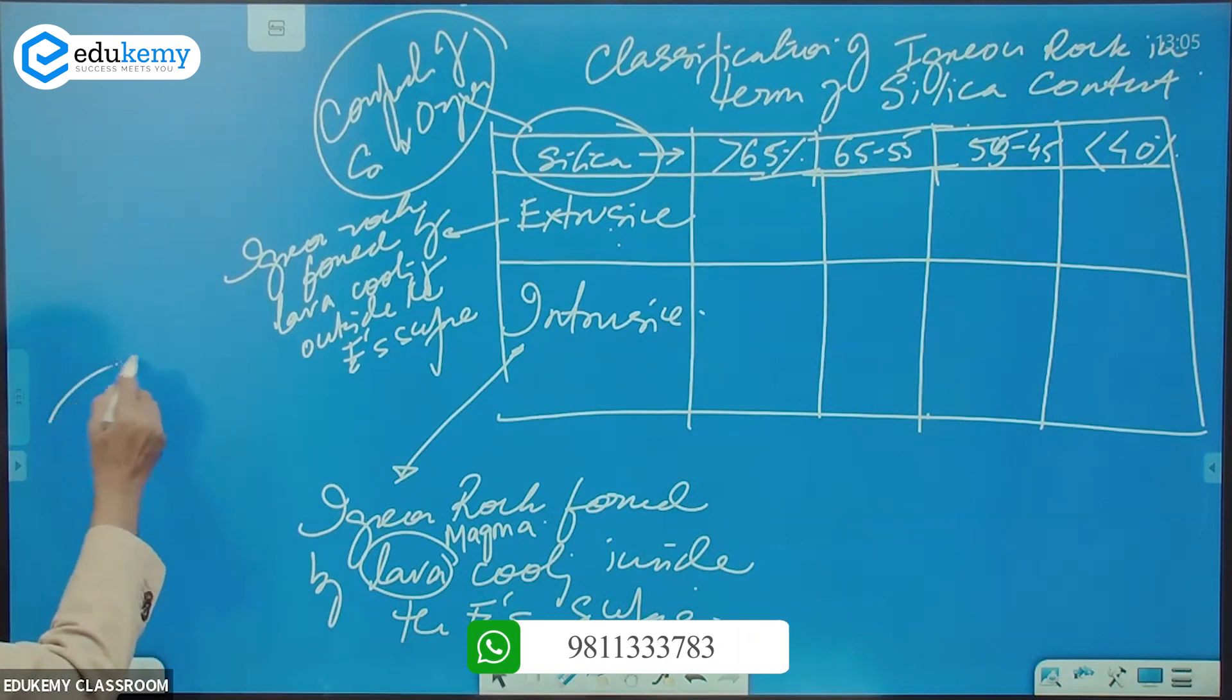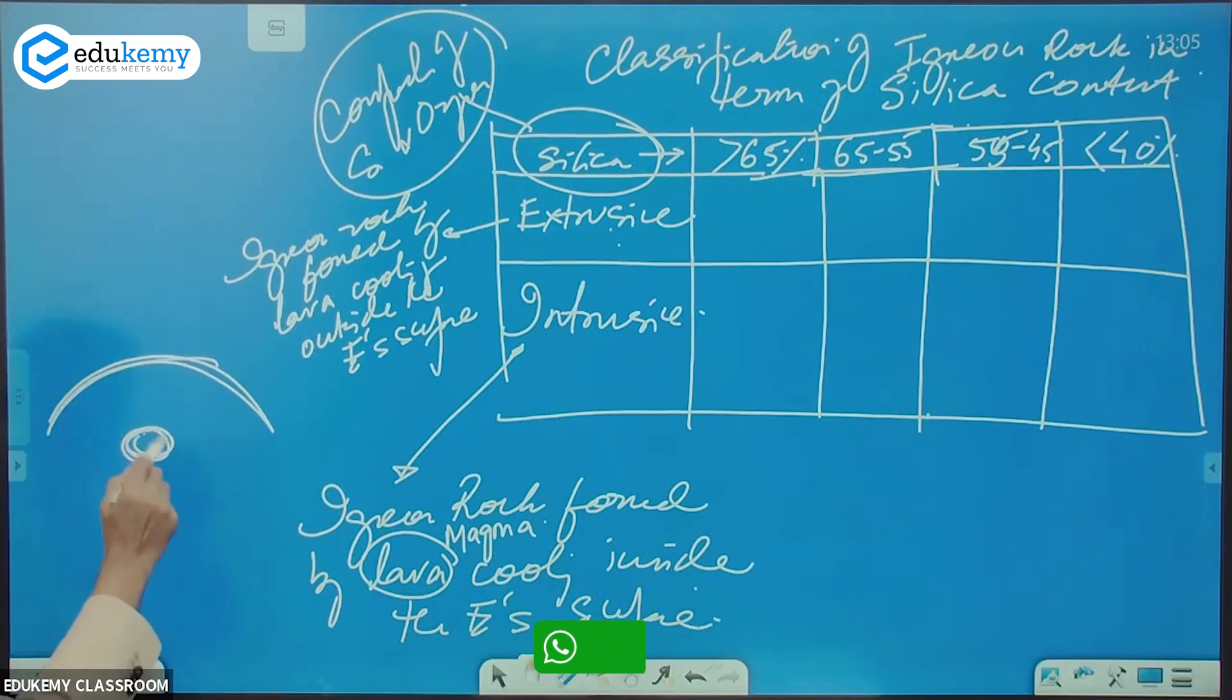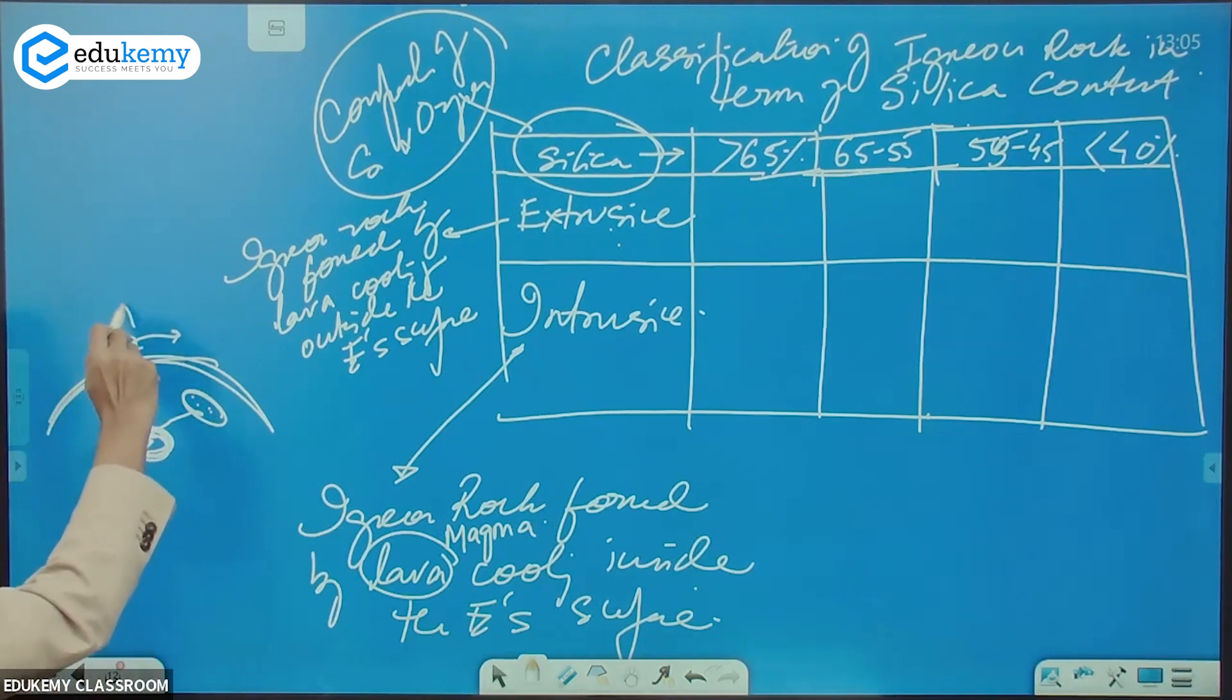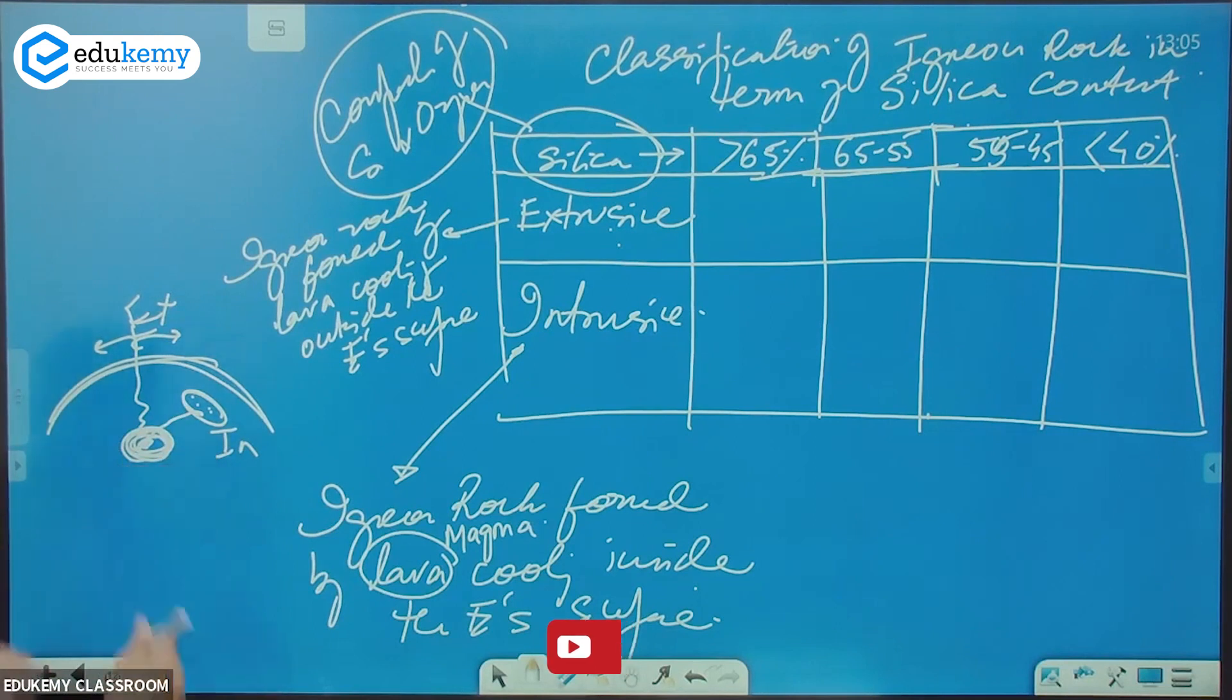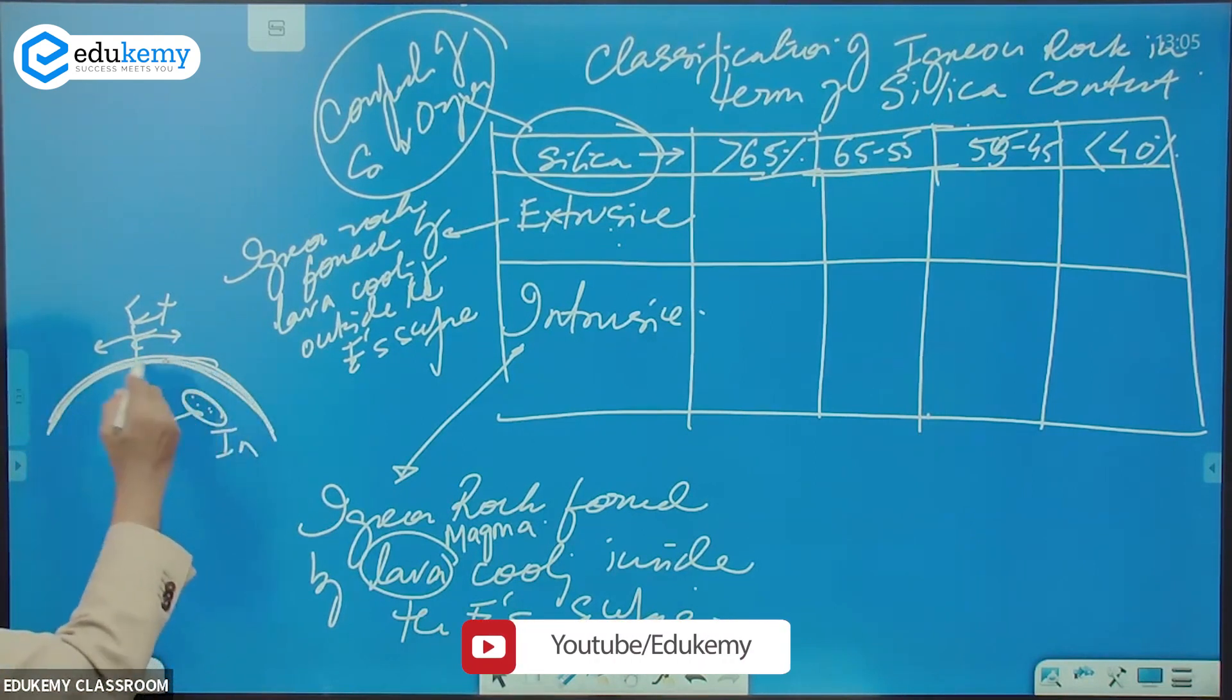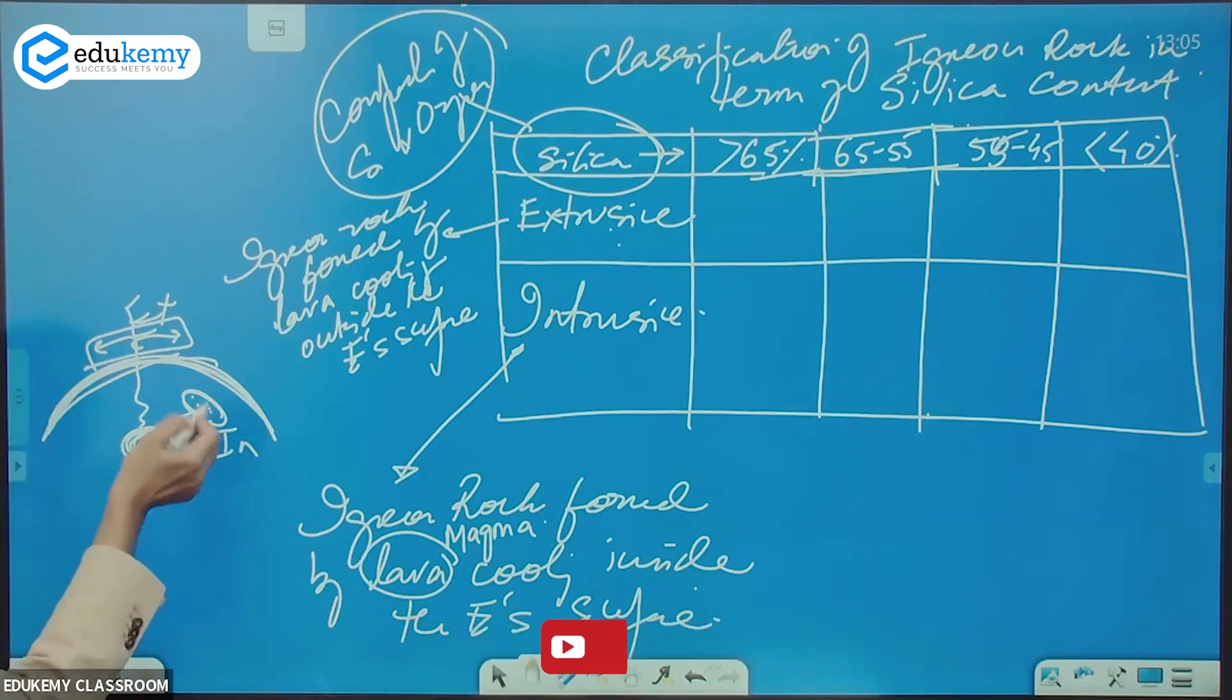So if this is the earth here, this is some source of molten magma. It can come out and form here. Or while going up, it can also become solid here. This is extrusive and this is intrusive. Inside the earth, this is the earth's surface. This forms outside the earth. This forms inside the earth.